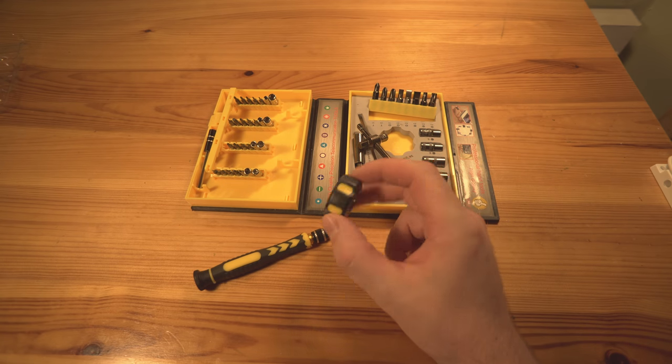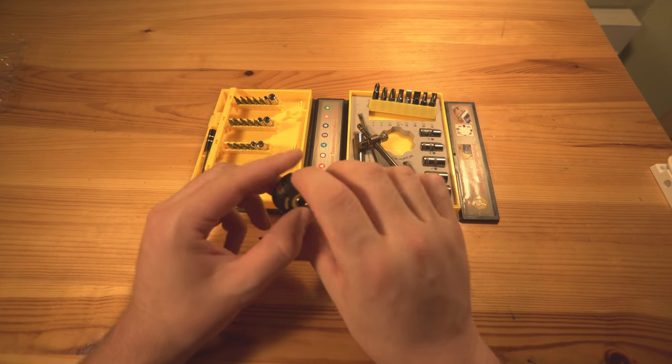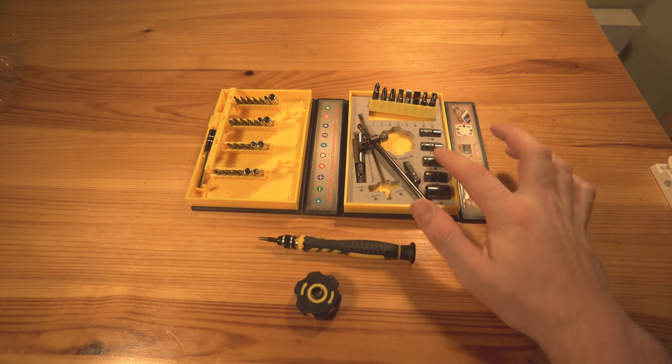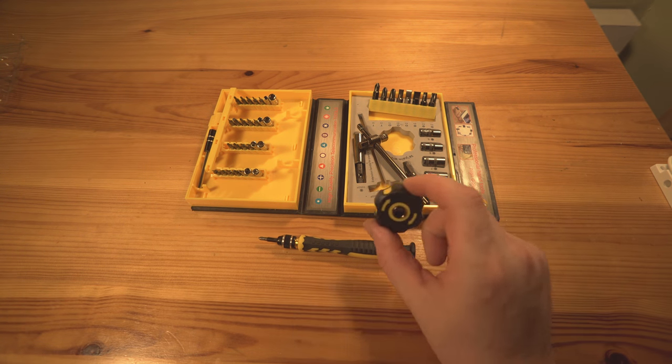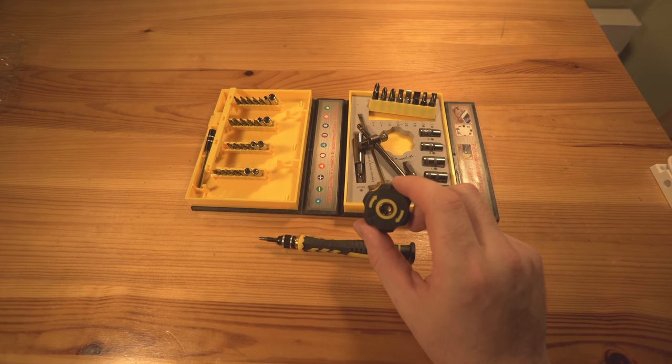But instead of using a screwdriver or a flathead and turning it over and over and trying to get something out, you can use a simple hand wrench socket, and you can fit different sockets on it. And if you have additional ones in your tool drawer or whatnot, you can put whatever you want on this.